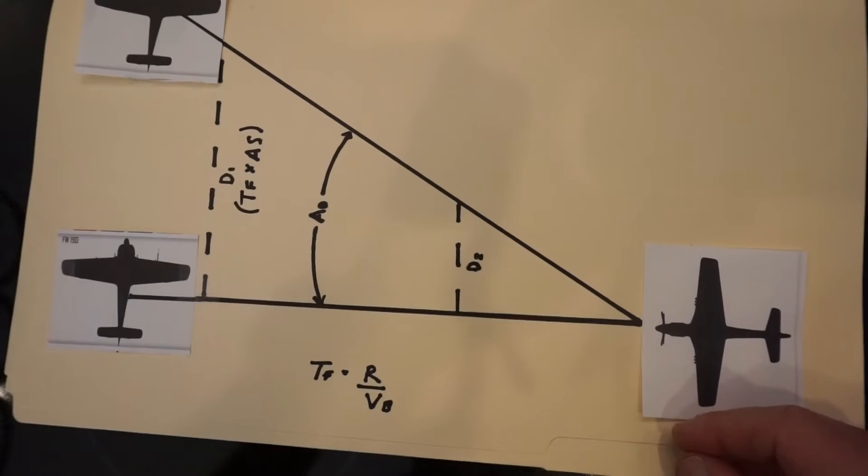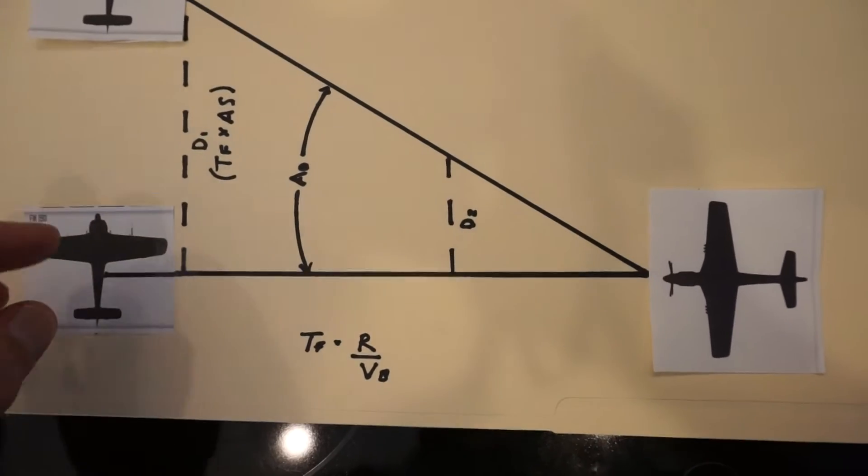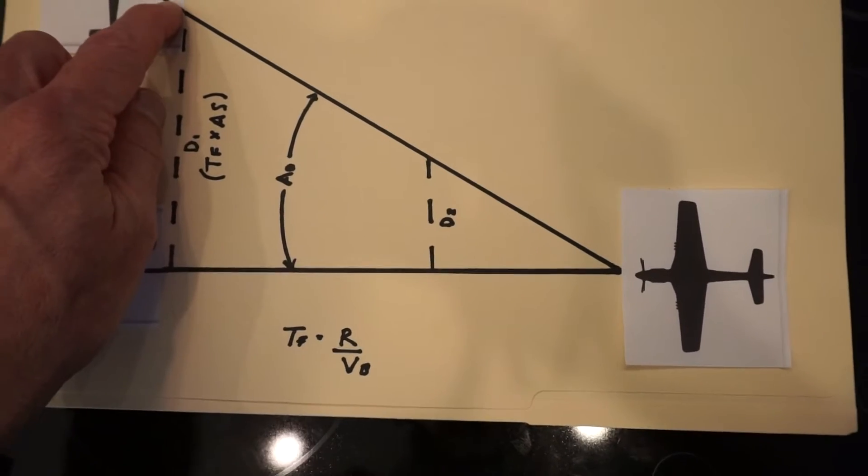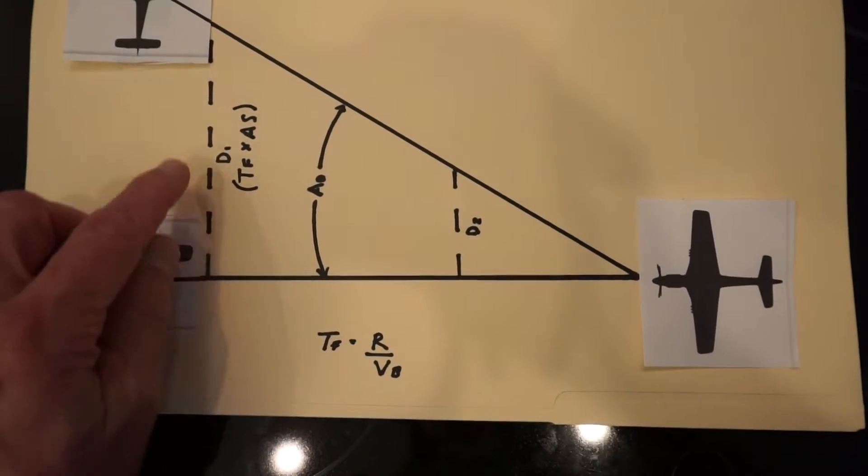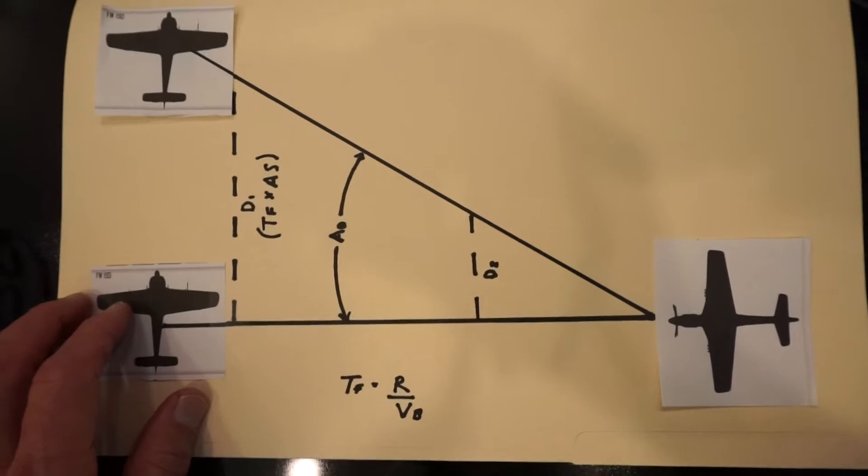When attacking an enemy fighter not from directly behind or on a head-on pass you must determine how far out in front of the enemy aircraft you must aim. The enemy fighter is going to travel a distance between the time you fire your guns and the time the bullets strike.